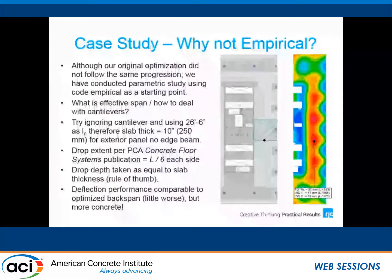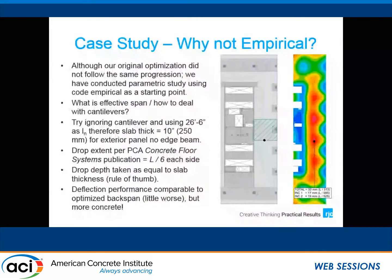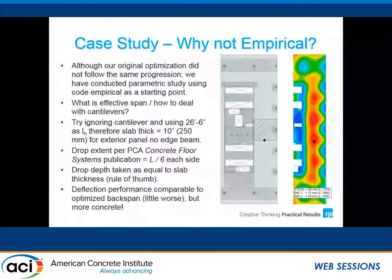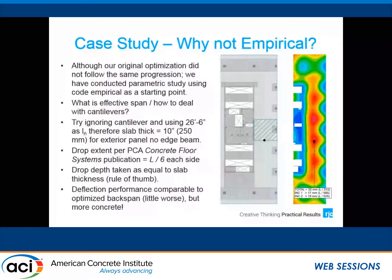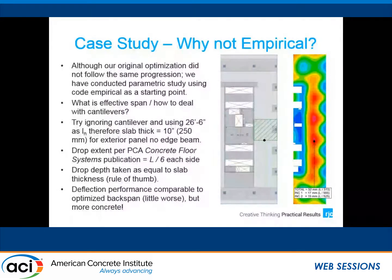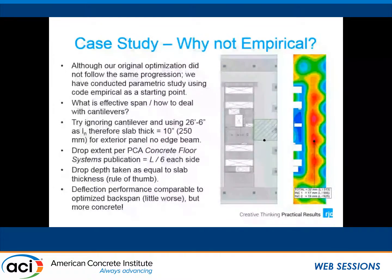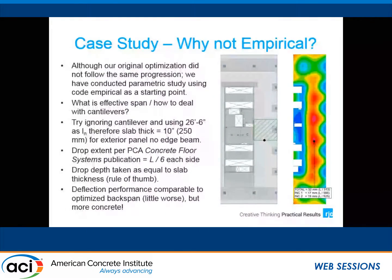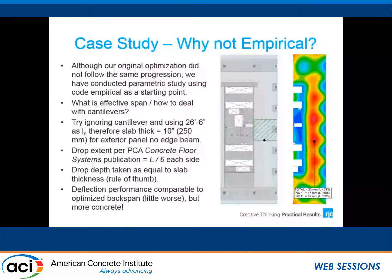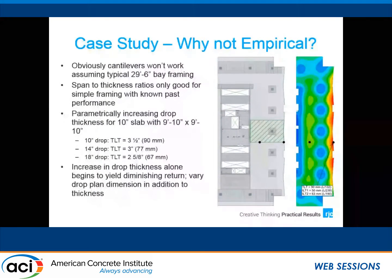I'm going to power through this because it makes more sense to focus on the shoring and reshoring methodology. We've put together a logic process to illustrate where we're coming from on the cantilevers. Ignoring the cantilevers, we came up with a 250mm slab using standard drop panel sizing with the drop panel depth equal to the slab. Running it, you find that in this scenario deflections correlate roughly with the span-to-depth ratio table limitations — so maybe that's a good starting point. We then reintroduced the cantilevers, and there's obviously a significant additional deflection.